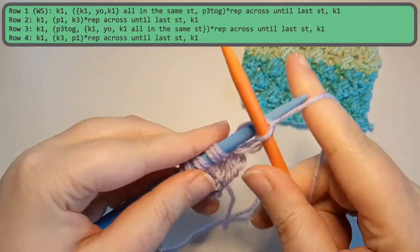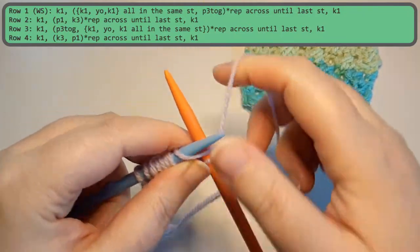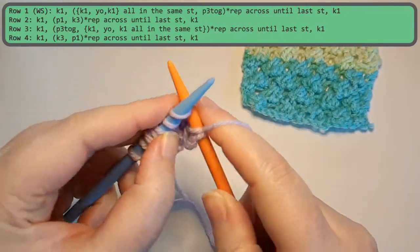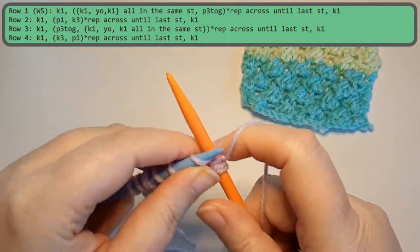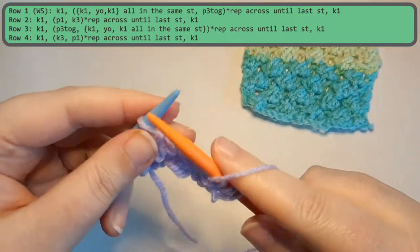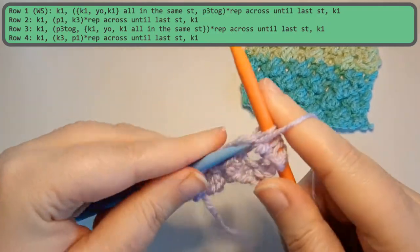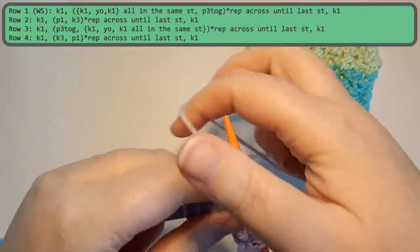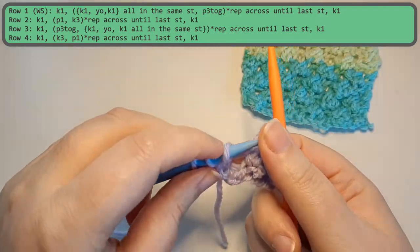So row four we start off with a knit. And then the repeat is going to be knit three, purl one. And you will repeat this portion all the way to the last stitch which will be a knit.